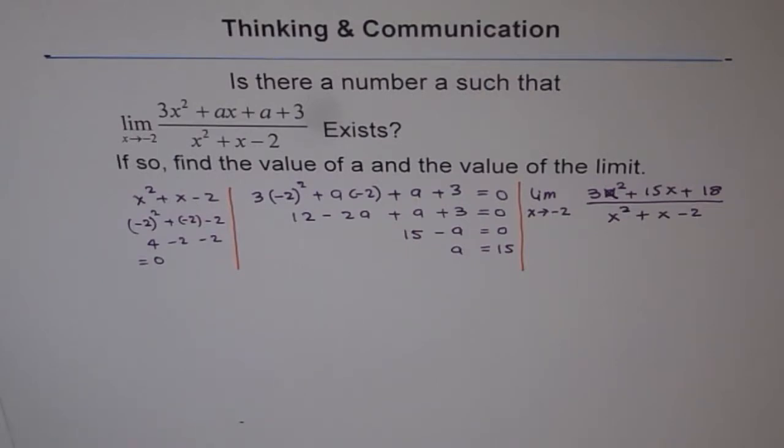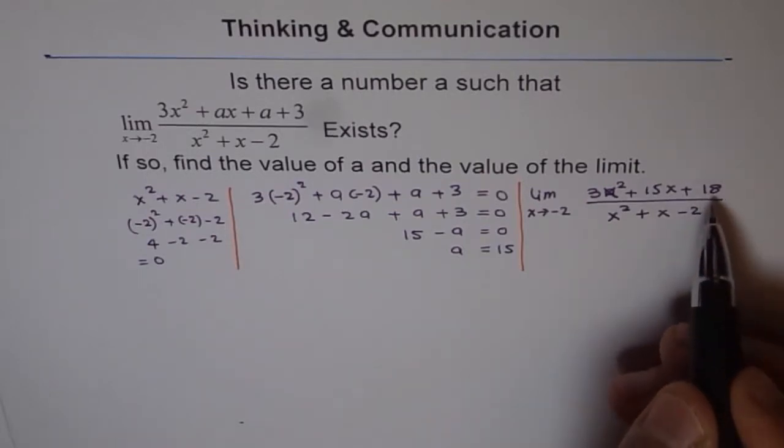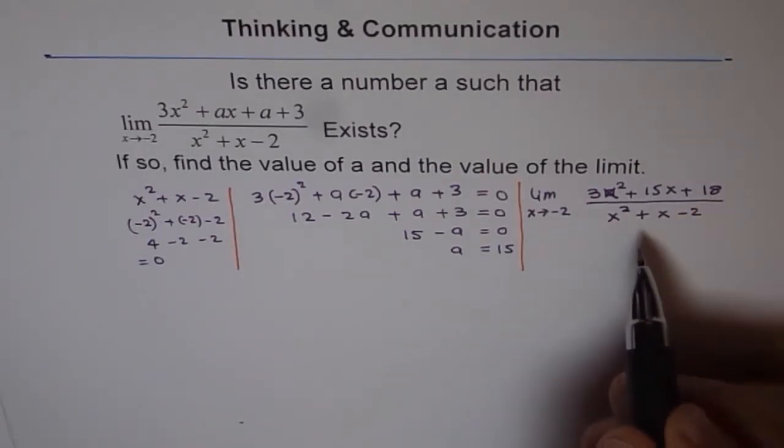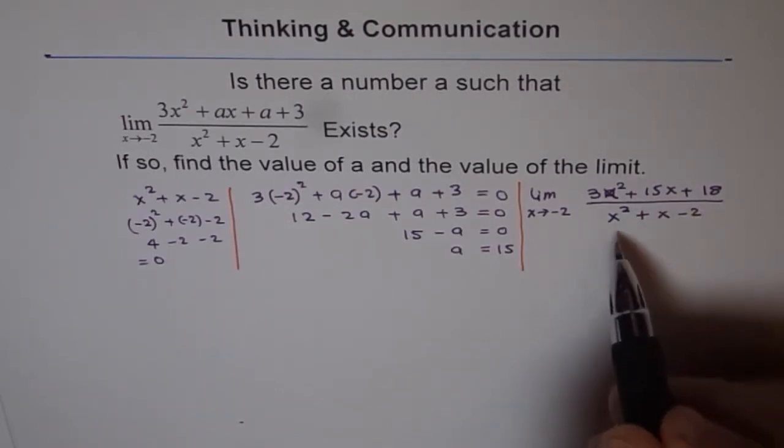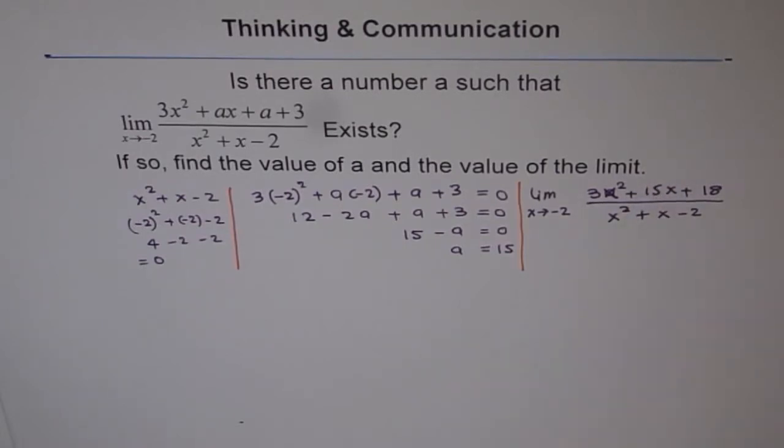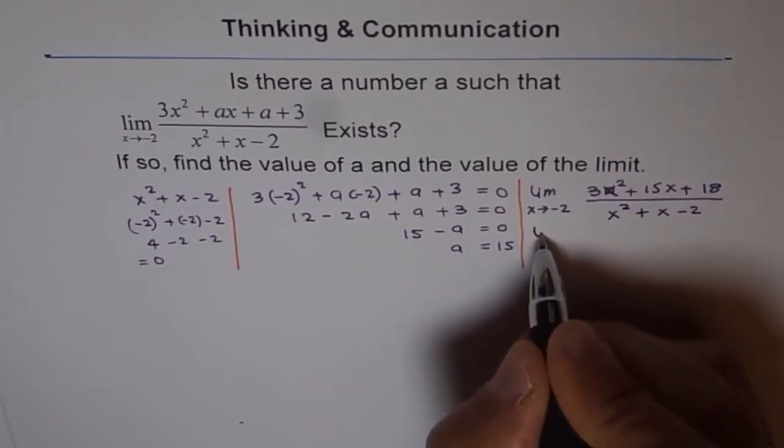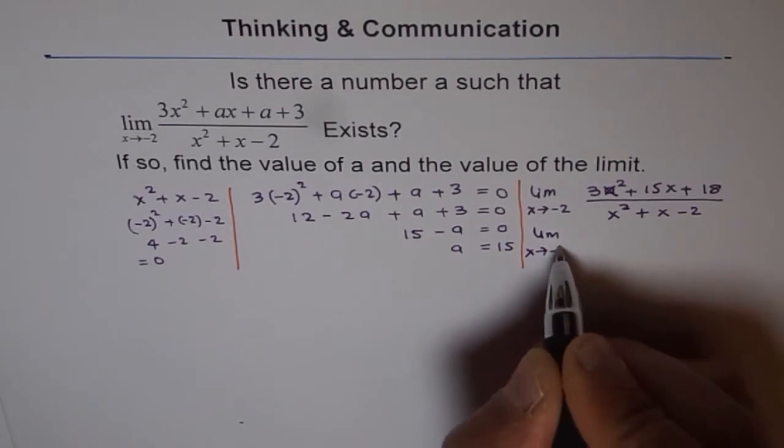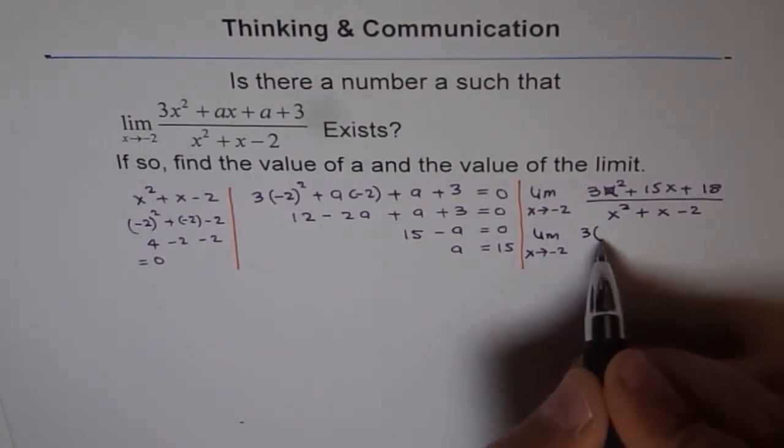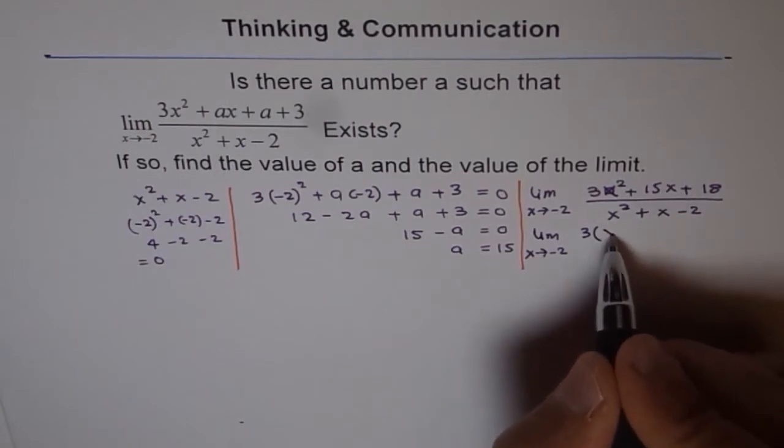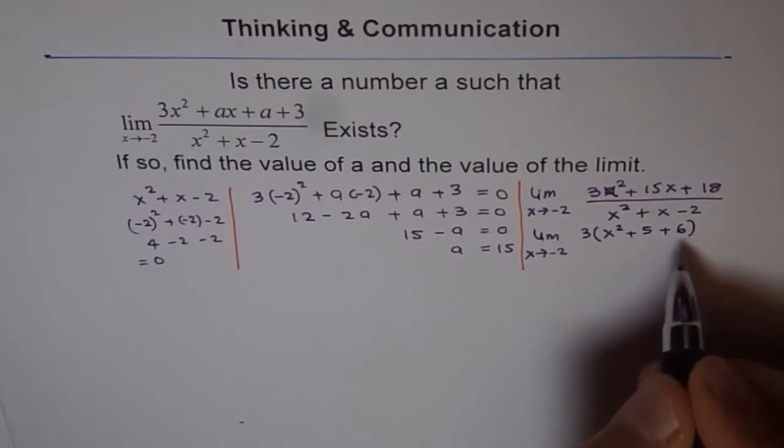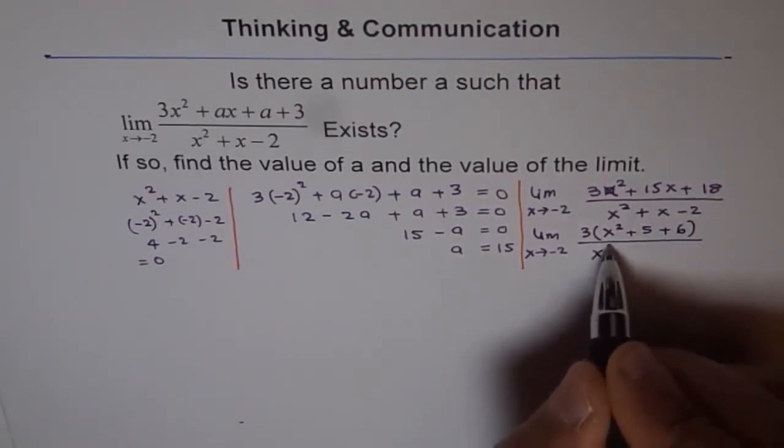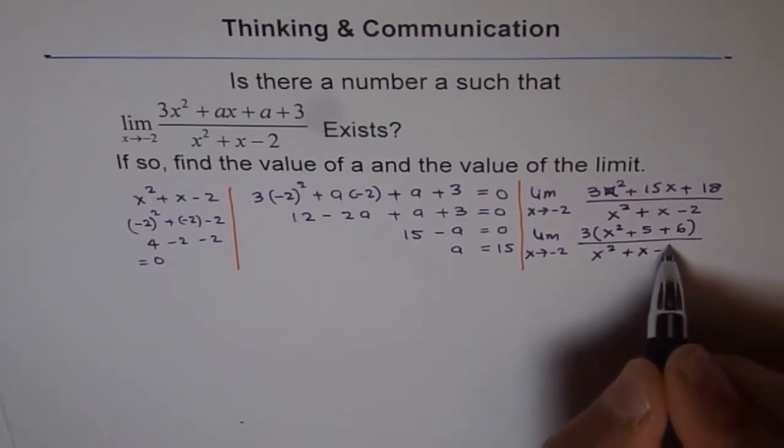Now, to factor it, what do we see? Product should be 18 times 3, and sum should be 15. So, we are looking for 2 numbers whose product is this. Well, before that what we can do is we can take 3 common. Let me write this equation in a simpler form. That is limit x approaches minus 2 and we can take 3 common. So, 3 times x square plus 5x plus 6 over x square plus x minus 2.